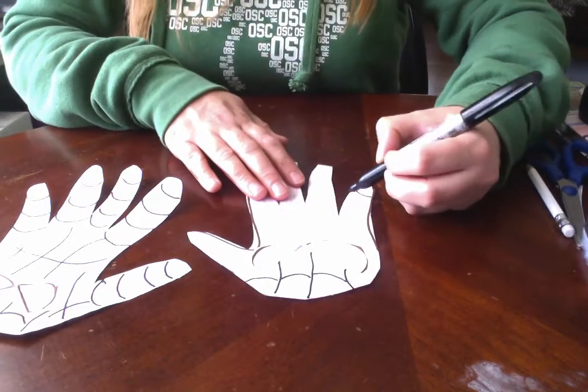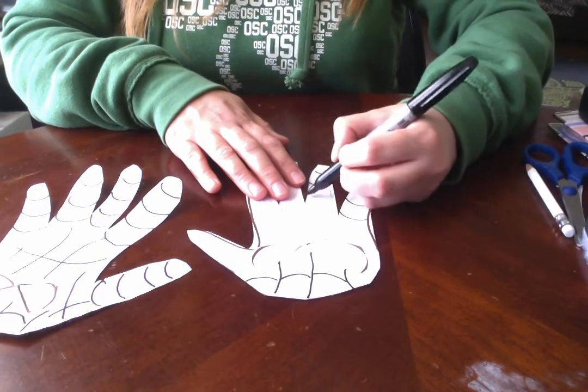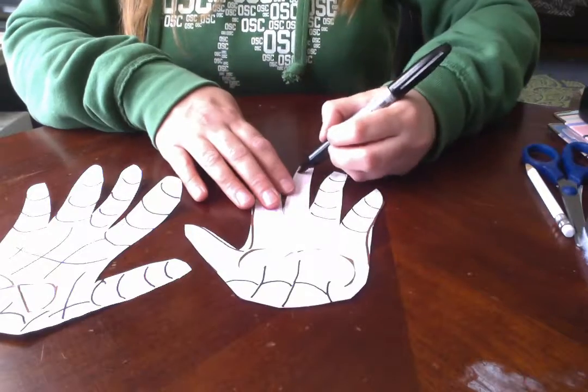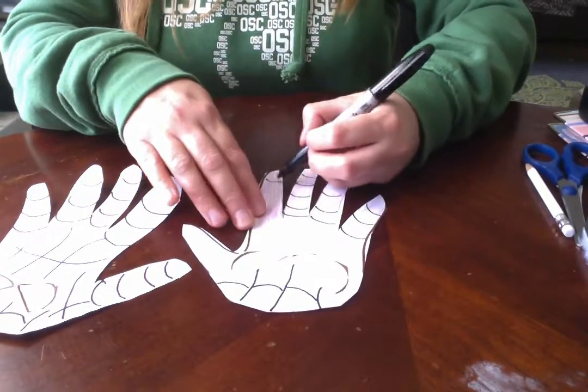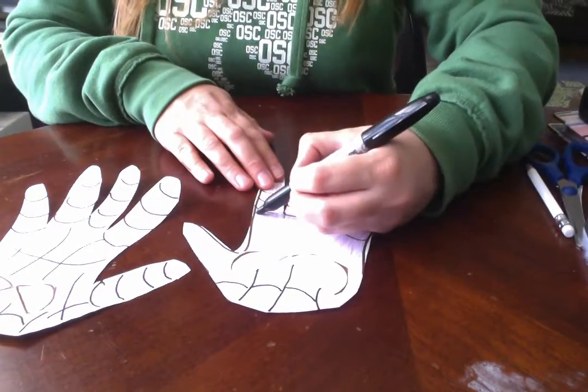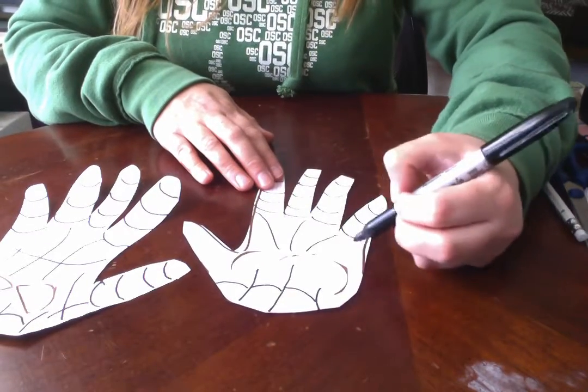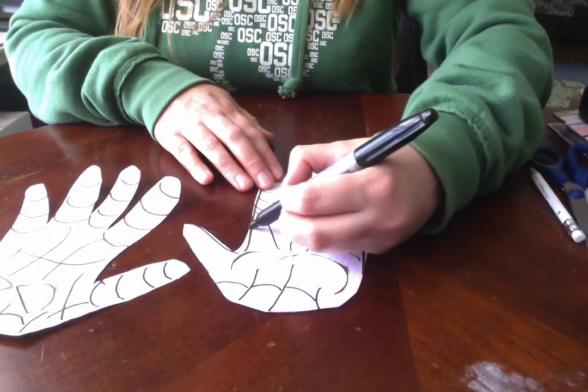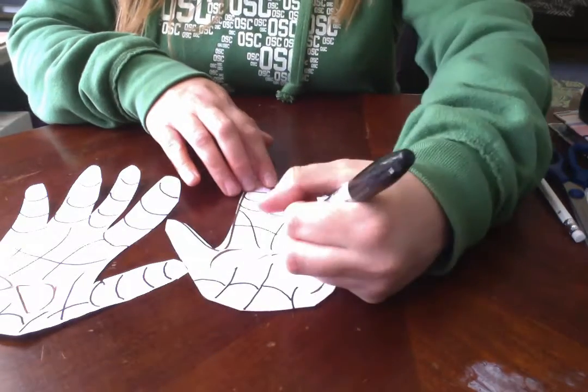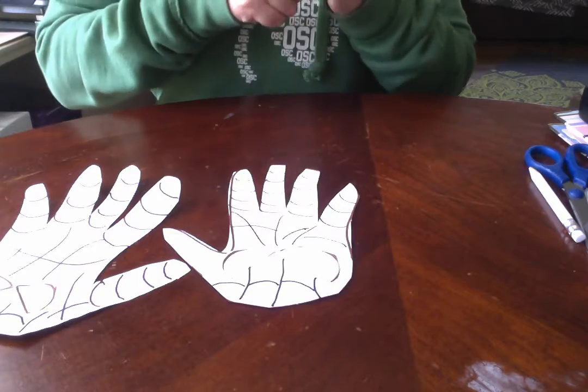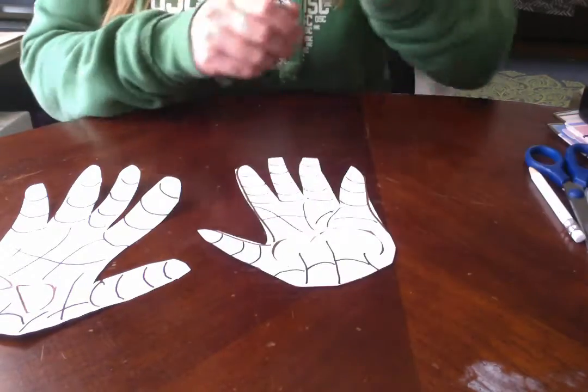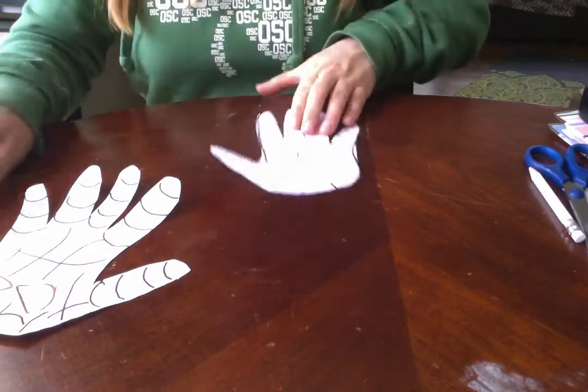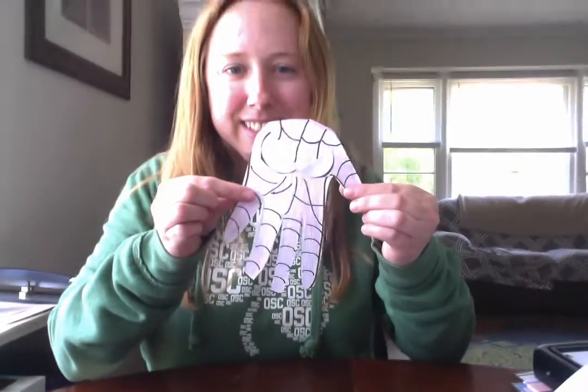Same thing with the fingers. Making small little curves is fine. And then you can make lines going up. Just like web type lines. We're done. Do the thumb. And there is your Spider-Man. Have a good day, everyone.